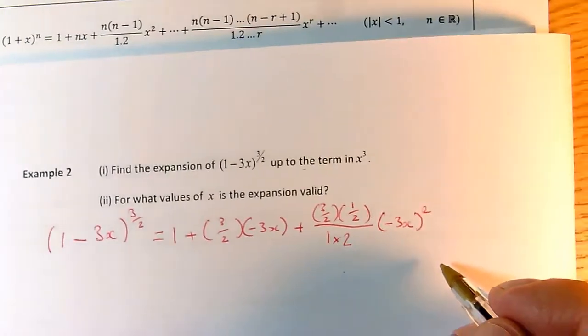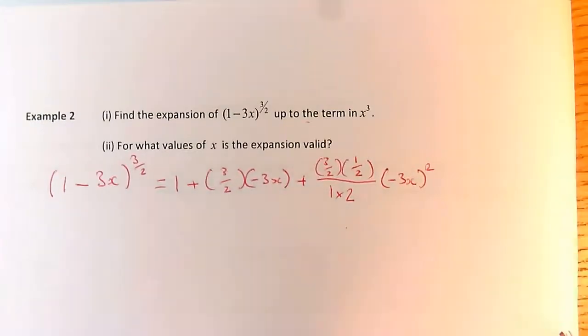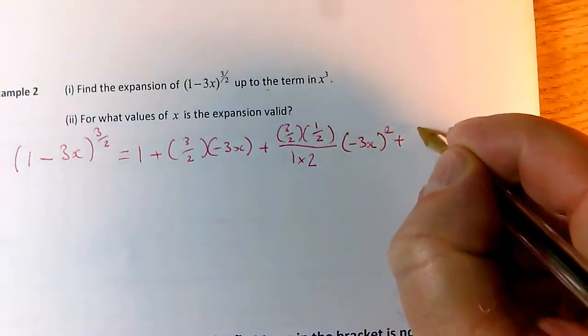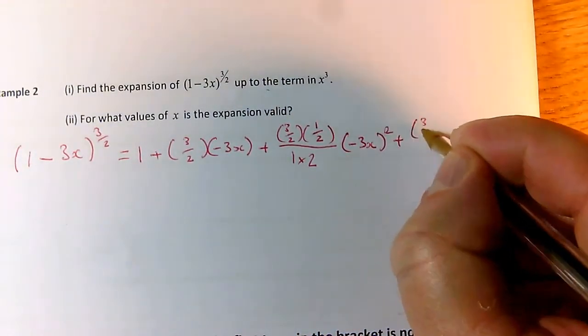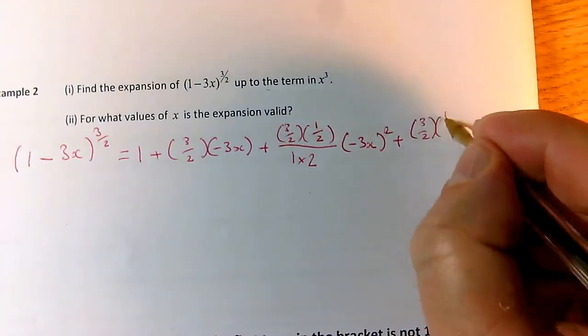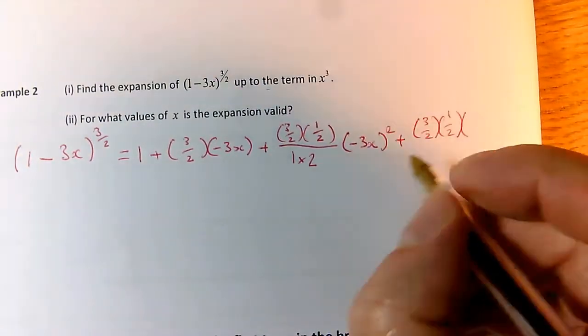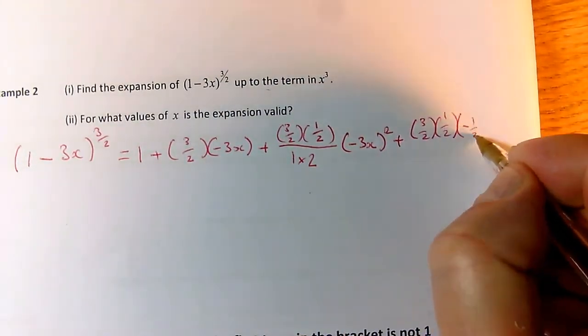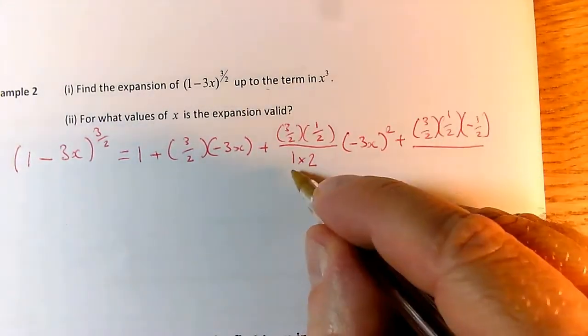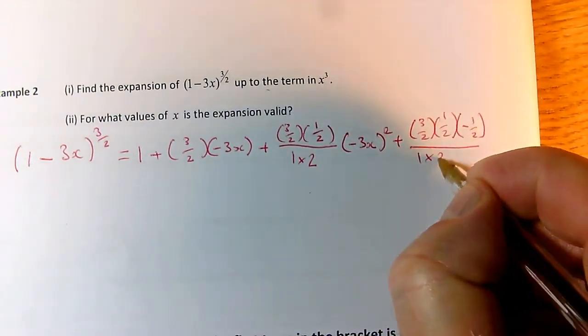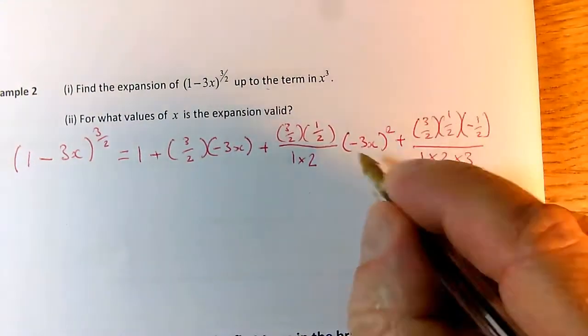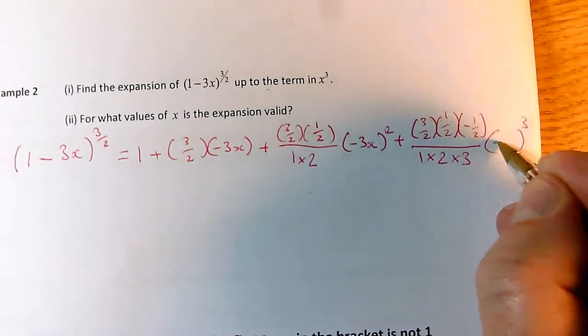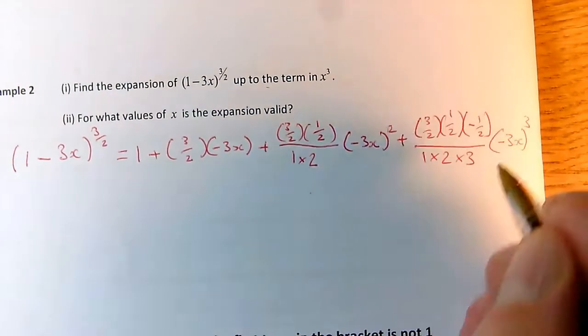And then for the next term, now I've got to extend the pattern. That formula doesn't tell me the next term, but I've got the pattern now. So on the top of my fraction, I start with 3 over 2. I take away 1 to get a half. That's what I had before. But now I've got a third bracket. I take away 1 again from a half, which gives me minus a half. And on the bottom, I've got 1 times 2. I take that one step further. 1 times 2 times 3. And then afterwards, instead of having bracket squared, I've got bracket cubed. So I've got minus 3x bracket cubed.